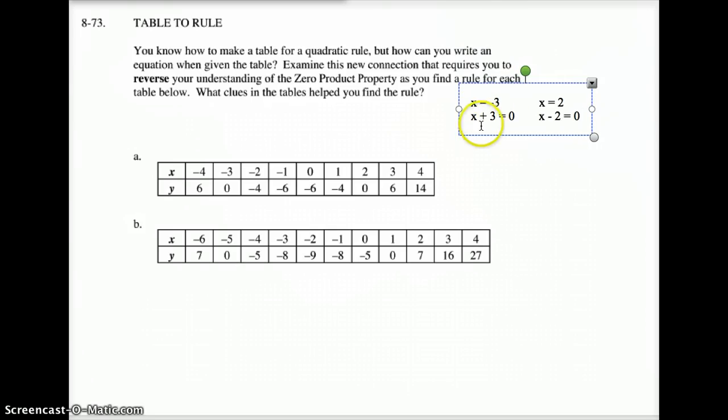And this one over here would be x minus 2 equals 0. See how we got those? Added 3 to both sides for this one to get x plus 3 equals 0. Subtract 2 from both sides here for x minus 2 equals 0. Now that we have that information, we know that this would have been your x plus 3. And the other one would have been an x minus 2. And that equals 0.